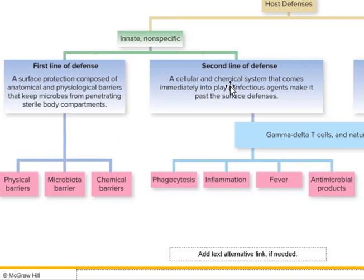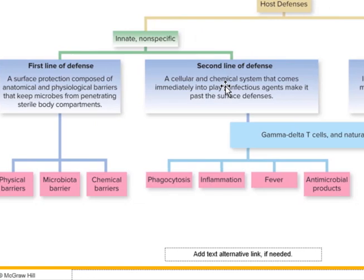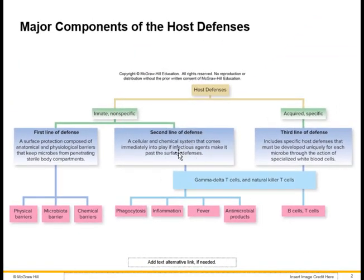The second line of defense includes the cells and chemical systems that come into play immediately if pathogens get past the surface barriers. Both the first and second lines of defense are innate — you're born with them — and they're non-specific, meaning they don't depend on a particular antigen. You don't need prior exposure to detect something as foreign and fight it off.